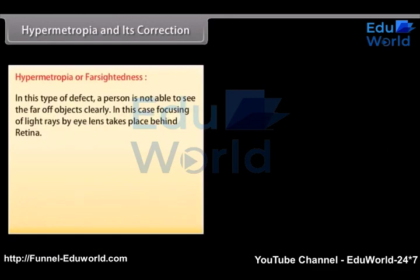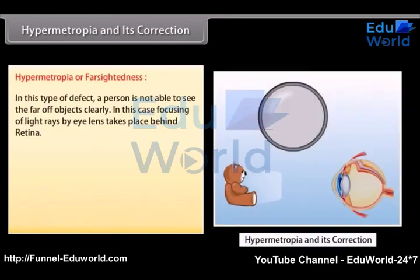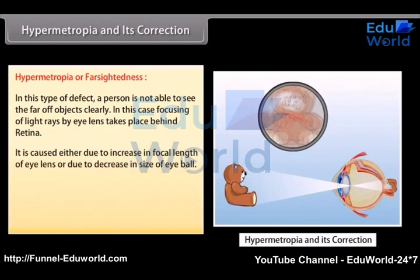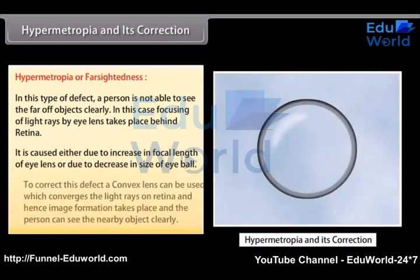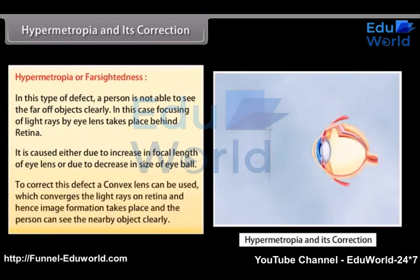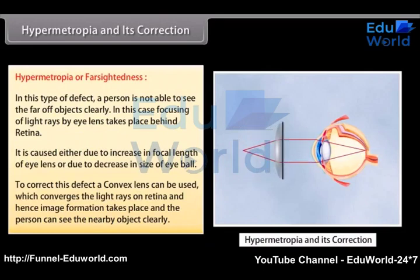Hypermetropia and its correction. In this type of defect, a person is not able to see far-off objects clearly. In this case, focusing of light rays by the eye lens takes place behind the retina. It is caused either due to an increase in focal length of the eye lens or due to a decrease in size of the eyeball. To correct this defect, a convex lens is used which converges the light rays on the retina, and hence image formation takes place and the person can see the nearby object clearly.